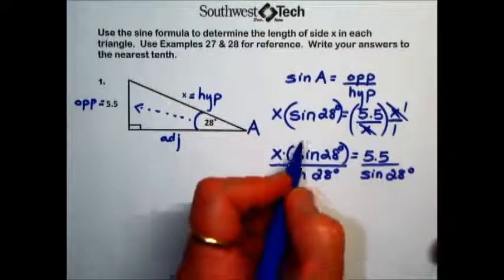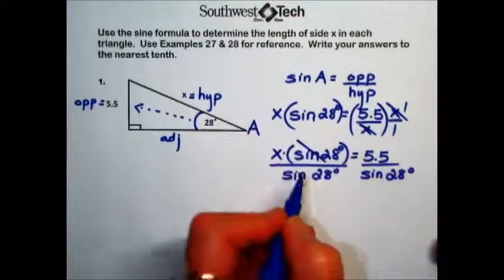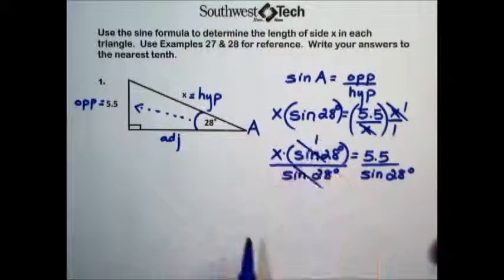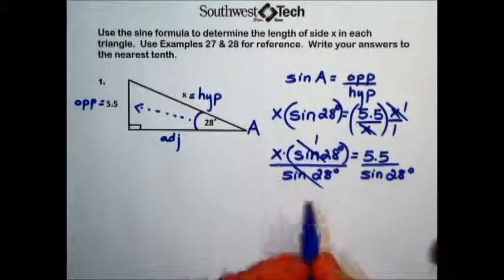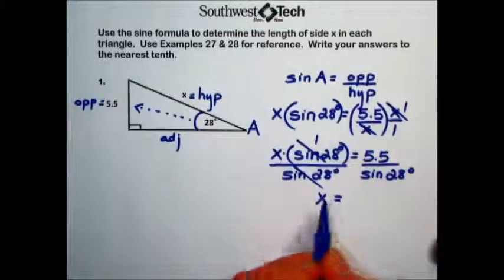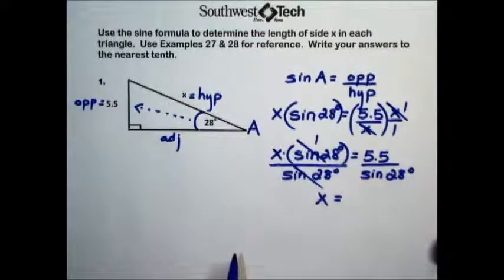Just like the x's in the previous step, the sine of 28 will cancel out, giving us a value of 1. x times 1 gives us x. And to simplify this value, we will start with the numerator.